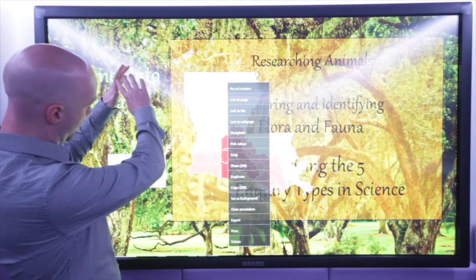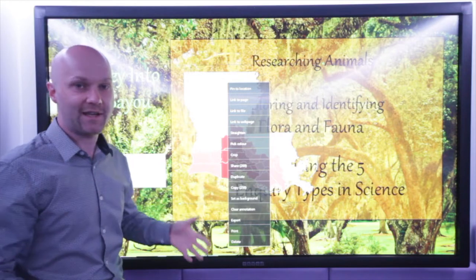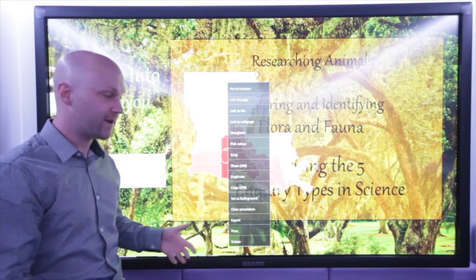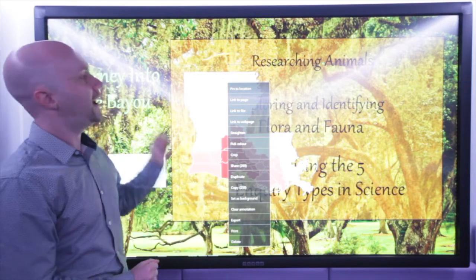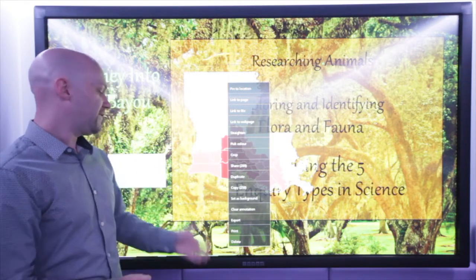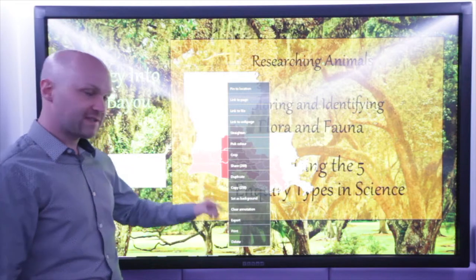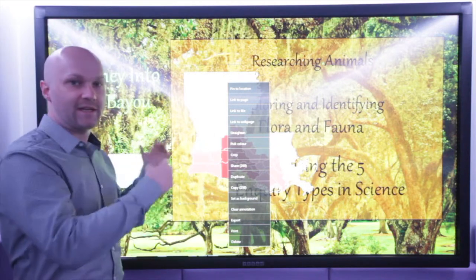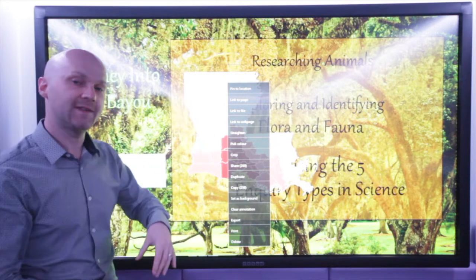Set as background. Well that's how I've got this Bayou scene by finding a decent quality JPEG or PNG, an image file and setting it as my overall background by tapping that. If I'm going to export it, it will take that individual file, that individual element and drop it onto the desktop.